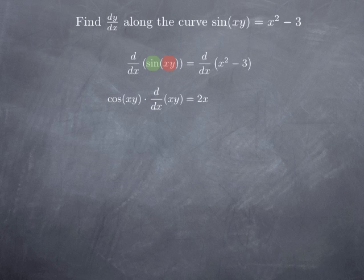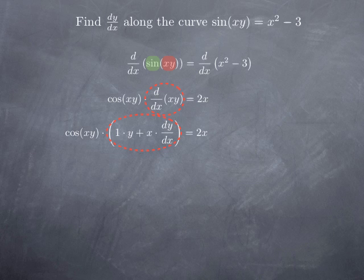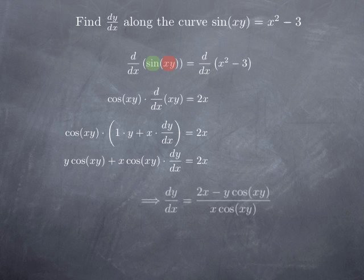Now we differentiate xy, which is a product, so we use the product rule. We obtain: the derivative of the first factor, which is 1, multiplied by the second factor y unchanged, plus the first factor x multiplied by the derivative of y, which is dy over dx. Multiplying things through, we get y cosine(xy) plus x cosine(xy) times dy/dx equals 2x. Solving for dy over dx, we obtain (2x minus y cosine(xy)) divided by x cosine(xy).